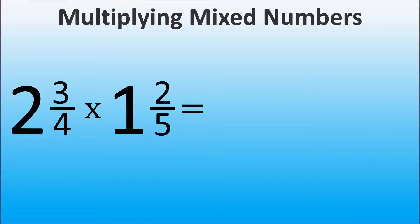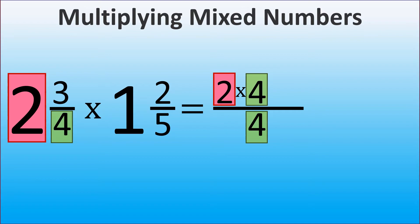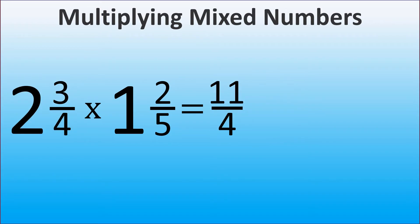First, we represent each mixed number as an improper fraction. Let's start with 2 and 3 over 4. We have 2 wholes and we can represent each whole as 4 over 4 because we have 4 in the denominator. Thus, we multiply 2 times 4 and then we have to add 3 to that because we initially had 3 in the numerator. 2 times 4 plus 3 is 11, so we have 11 over 4.